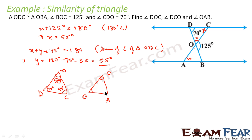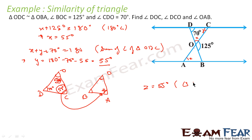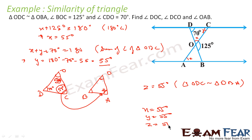We have to find angle OAB, which is Z. Since triangles ODC and OBA are similar, Z is equal to 55 degrees. So we have X equal to 55, Y equal to 55, and Z equal to 55 — all 55 degrees. That is the answer.